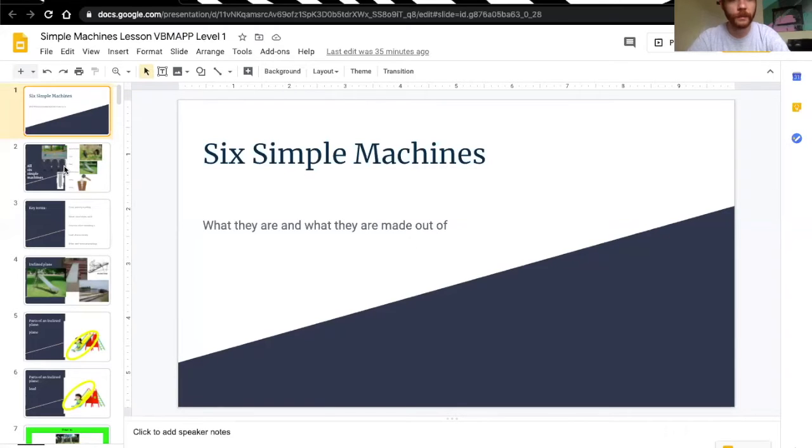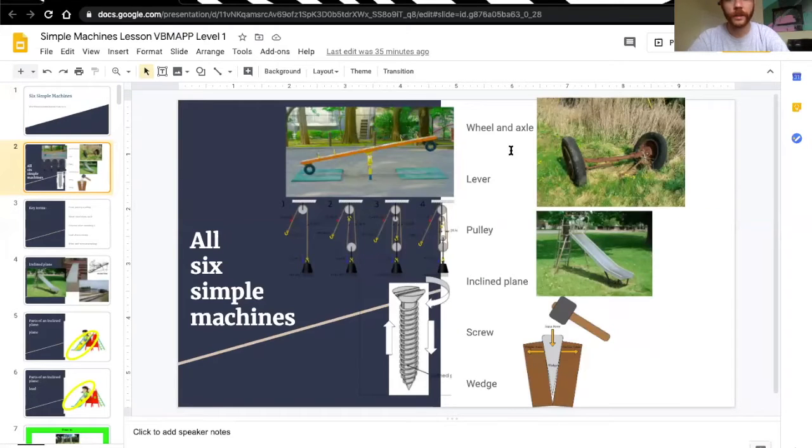The six simple machines: there's a wheel and axle, a lever, a pulley, an inclined plane, a screw, and a wedge.